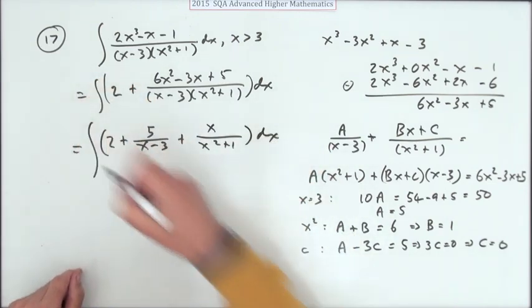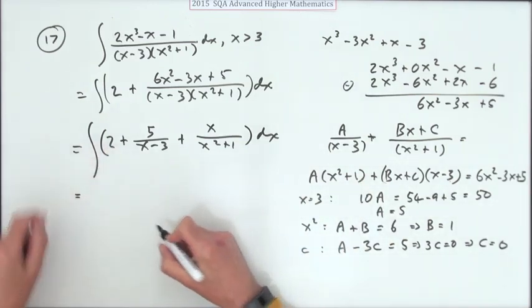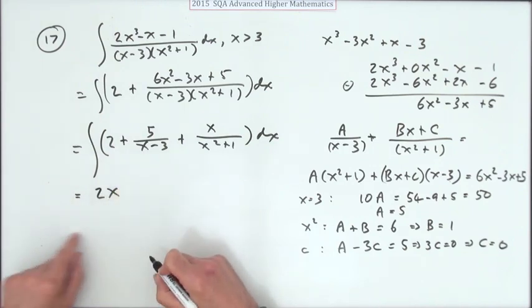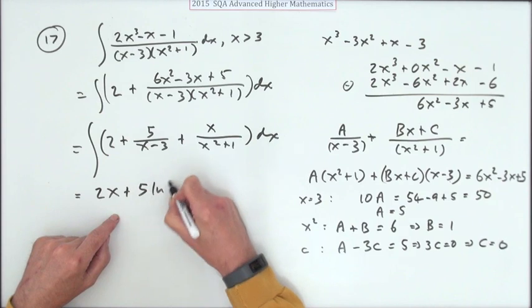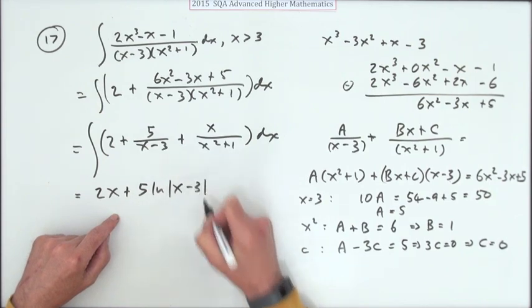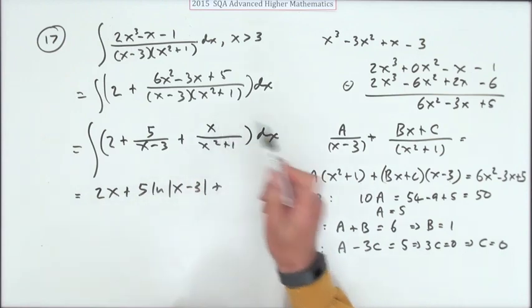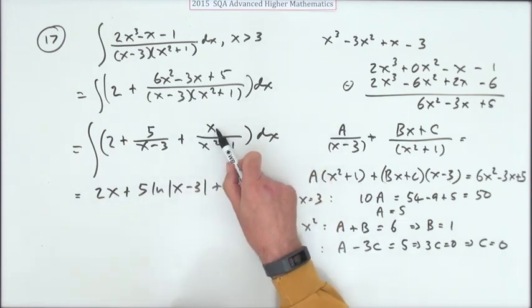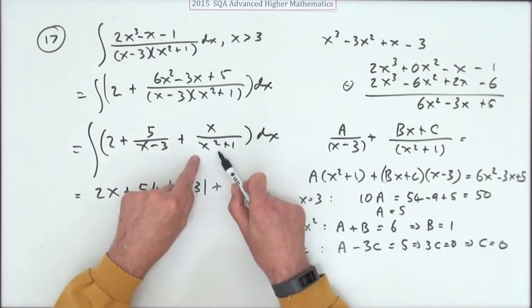It's looking better all the time. In fact it's done now, isn't it? Because these three parts readily integrate. That goes back up to 2x. That's a wee log, that'll be 5 ln of x minus 3.